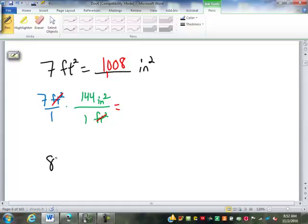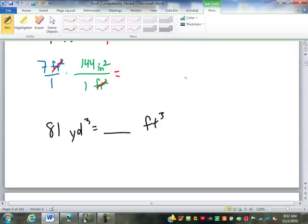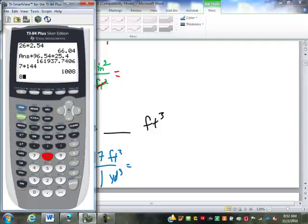How about this one? 81 cubic yards. Cubic yards on bottom, cubic feet on top. Which one's the bigger unit? 81 times 27, 2187.